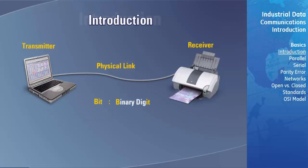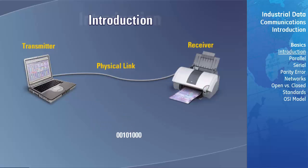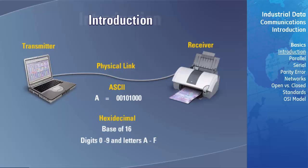A bit is an abbreviation for binary digit and is the unit of data within a microprocessor. A bit represents either the digit 1 or 0 in the binary numbering system. A byte is composed of 8 bits. Individual characters in the alphabet are typically encoded in an 8-bit code or byte before transmission across a data link. ASCII is one of the most common coding systems used for this purpose. Another popular way of encoding characters is hexadecimal, a numbering system with a base of 16 that uses digits 0 through 9 in addition to the letters A through F.